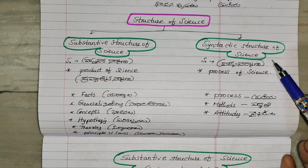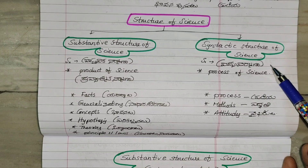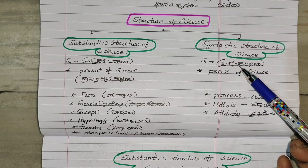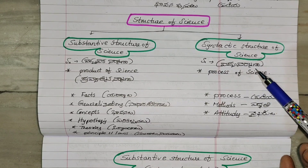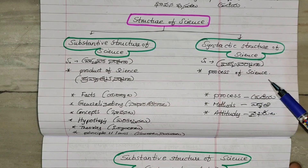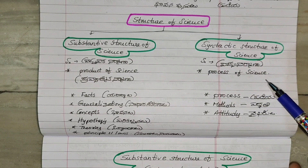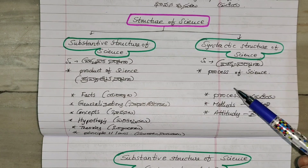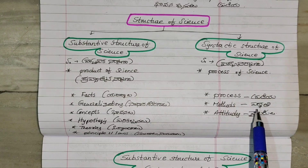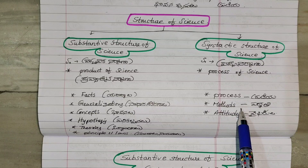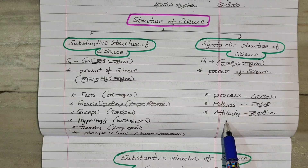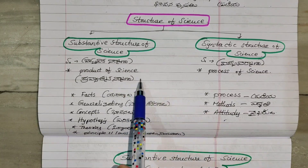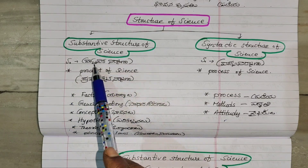The Syntactic Structure of Science is the process of science. This is the process of science, and it leads to the final result of the product.